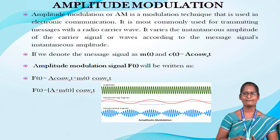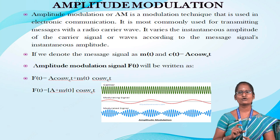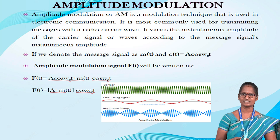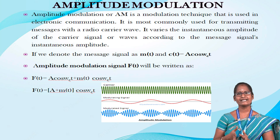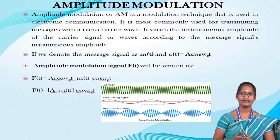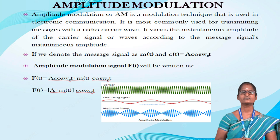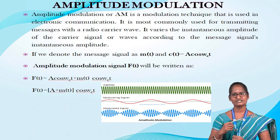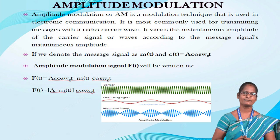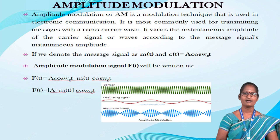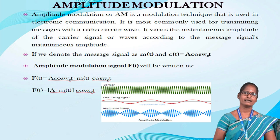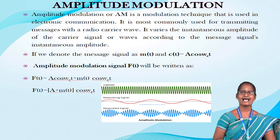Amplitude modulation or AM is a modulation technique used in electronic communication, most commonly used for transmitting messages with a radio carrier frequency wave. It varies the instantaneous amplitude of the carrier signal according to the message signal's instantaneous amplitude. If we denote the message signal as m(t) and c(t) = A cos(wc·t), then the amplitude modulation signal will be written as f(t) = A cos(wc·t) + m(t). In the diagram we can see the amplitude modulation, where the carrier and the modulating frequency waves are shown.